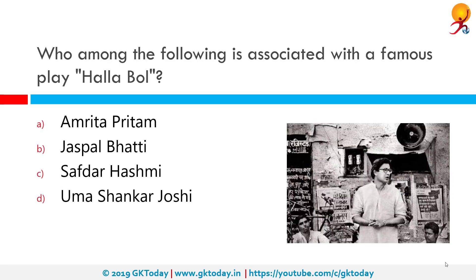Who among the following is associated with the famous play Halla Bol? The correct answer is Safdar Hashmi. Safdar Hashmi was a communist playwright and director best known for his work with street theatre in India. He was murdered in 1989 in Jhandapur while performing a street play, Halla Bol.